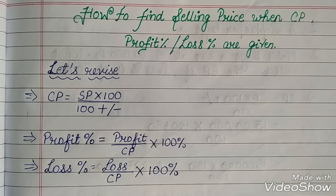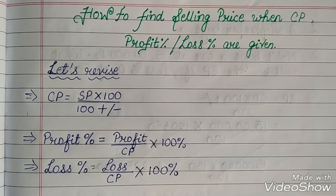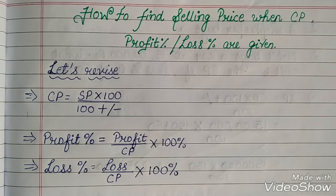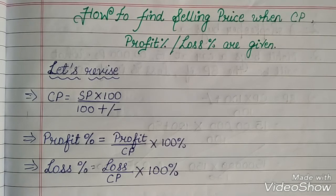Second is profit percent, which I taught you in the second part. Profit percent is profit divided by cost price multiplied by 100%. Loss percent is loss divided by cost price multiplied by 100%.